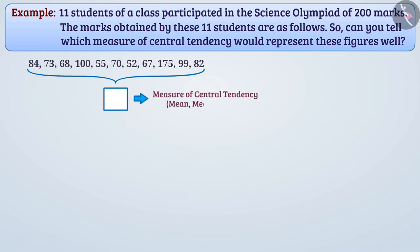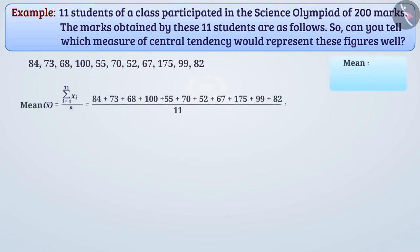A measure that represents the entire set of data with a single value is called a measure of central tendency. We know that mean, median, and mode are measurements of central tendency. To find the representative value of data shown, we will find the value of each measure. Here, mean is 84.09.